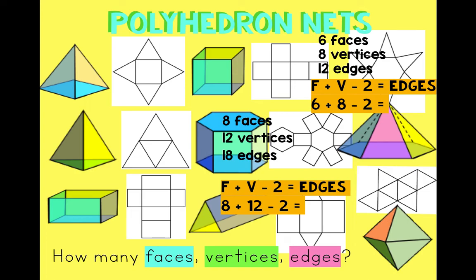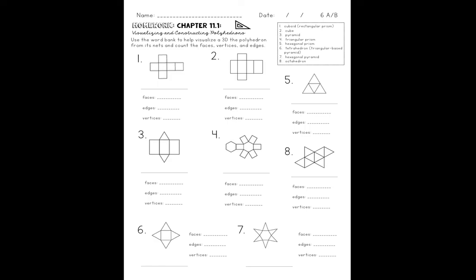For your homework today, you're going to do these eight polyhedrons: write how many faces, edges, and vertices each one has, and the name. You can print it if it's easier, or write your answers and send me a photo.